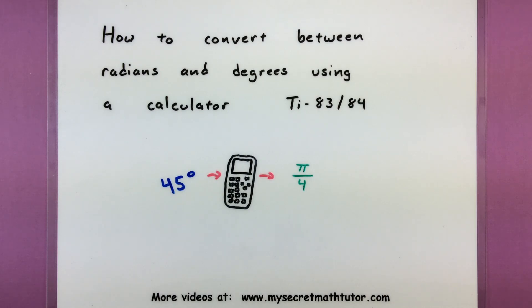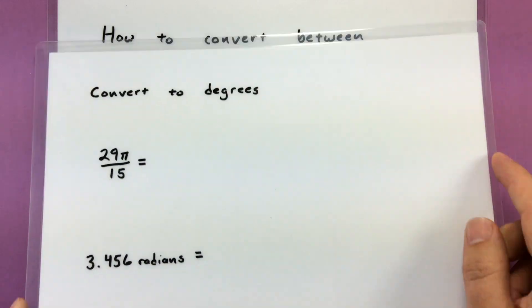The calculator is a very good tool for switching back and forth between degrees and radians. There are a few different buttons you have to make sure you press along the way, but let's go ahead and do some examples and you'll see that it's not too bad of a problem.